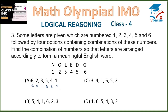Checking option B: 5 is D, 4 is E, 1 is N, 6 is G, 2 is O, 3 is L — spelling DENGOL, which is not a meaningful word. Option A gives GOLDEN, which is meaningful.